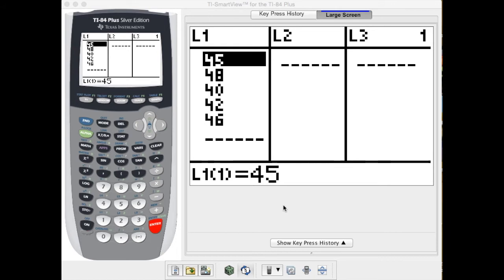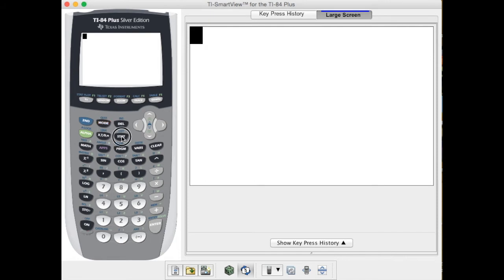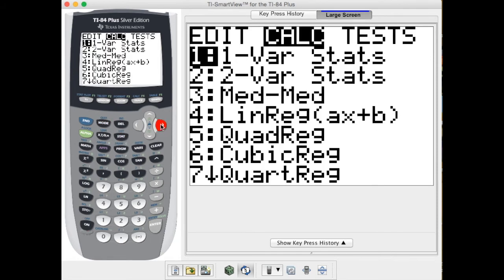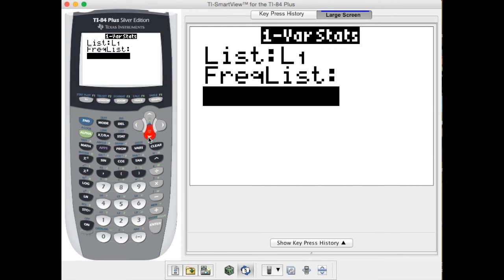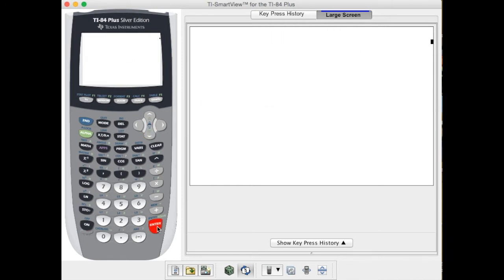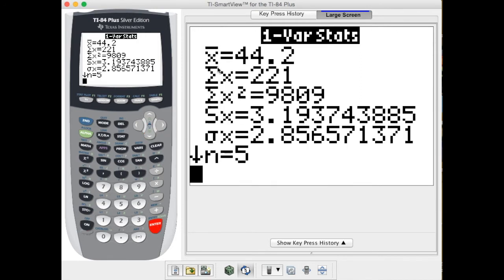Before we do anything else let's find our original mean and standard deviation. We do that by going second mode to quit, stat, over to calc, and then to one var stats, identifying my list as list one, and then hit enter and calculate. Our mean is x̄ which is 44.2 and our standard deviation is 3.19.